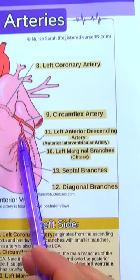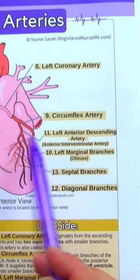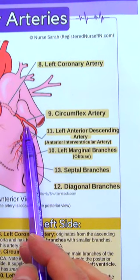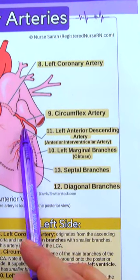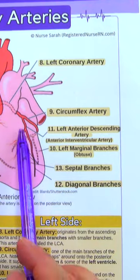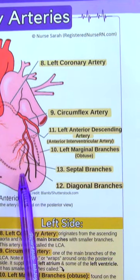Then we go back to the anterior part of the heart where we have the left anterior descending artery. It also has its branches, like the diagonal branches and the septal branches.